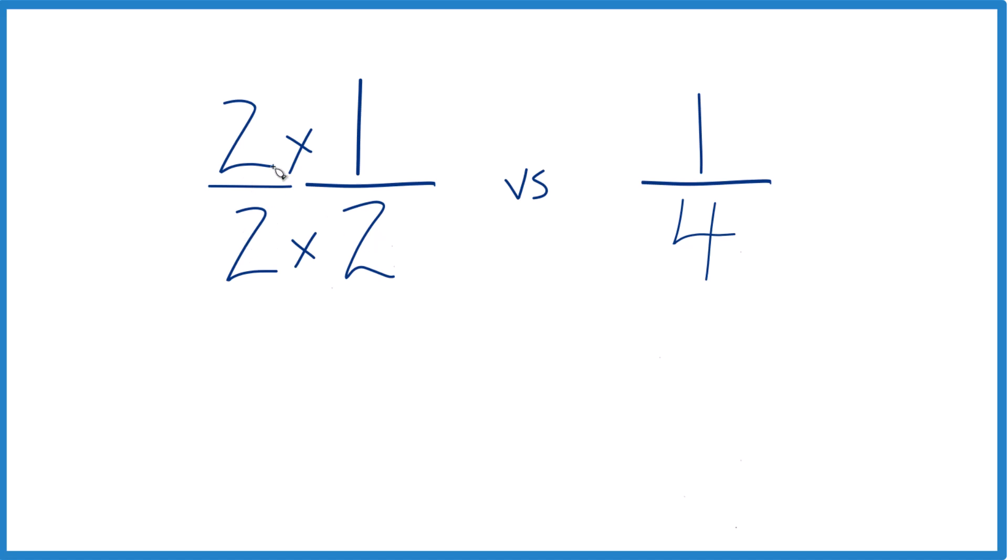Two over two, that's just one, so we're multiplying by one. And we get two times one, that's two. Two times two is four. Two-fourths, that's the same as one-half.